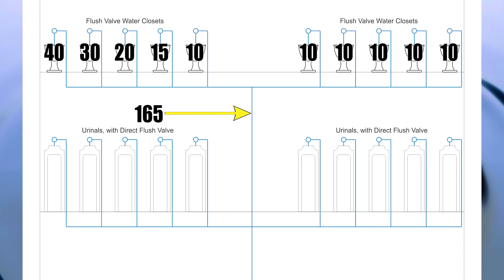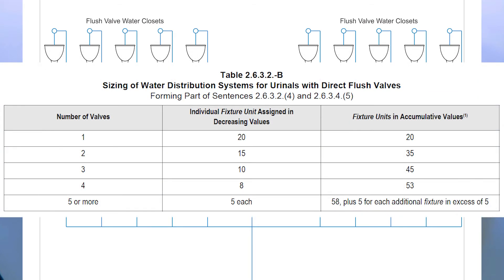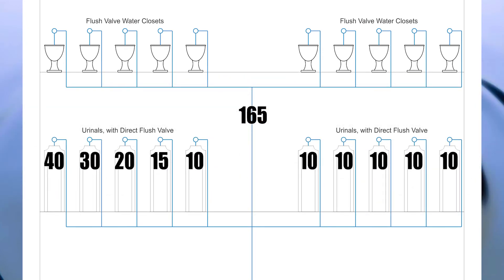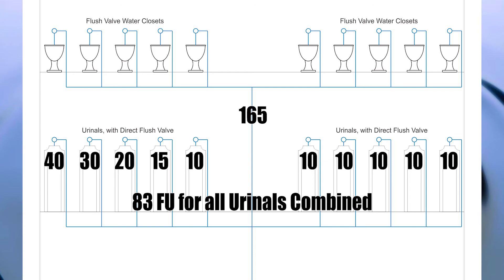We also have urinals on the next story with direct flush valves, so we're going to reference table 2632B and fill in the fixture unit values to calculate the hydraulic load on this pipe. If we add up all the fixture unit values for the urinals we get 83. But for this pipe we also need to add on the 165 fixture units from the water closets, giving us a total of 248 fixture units to size this pipe.